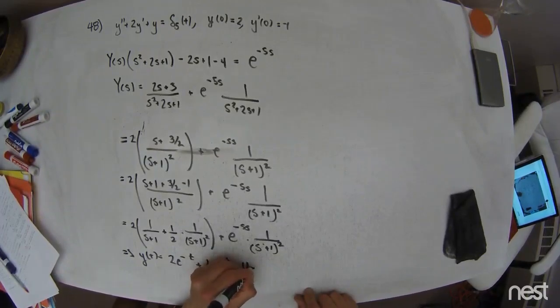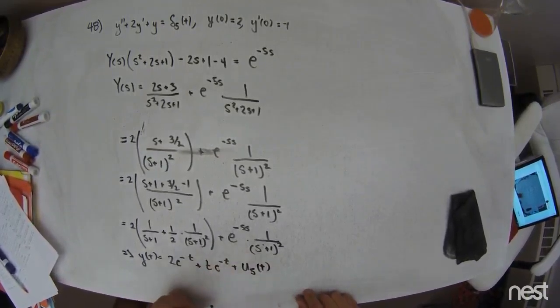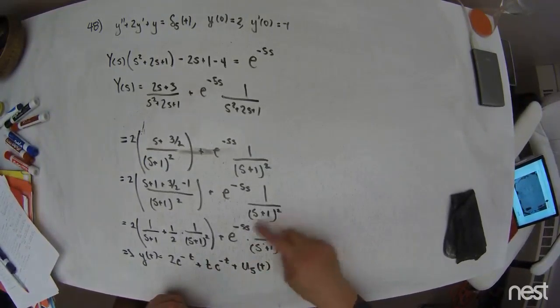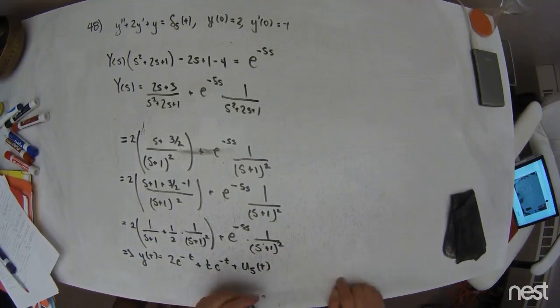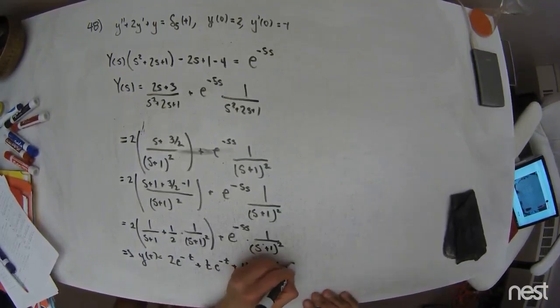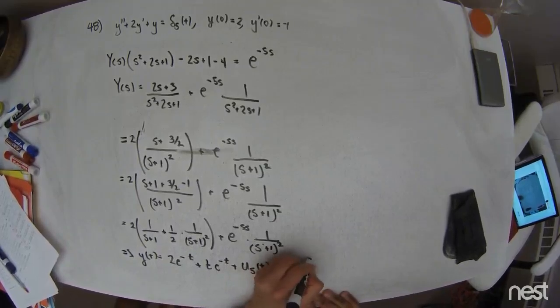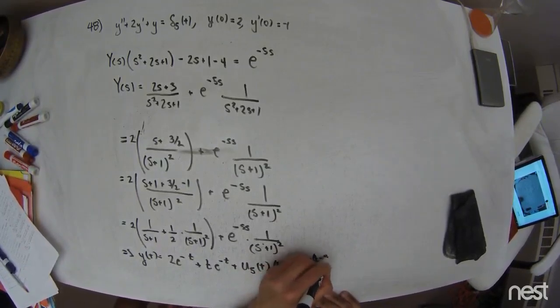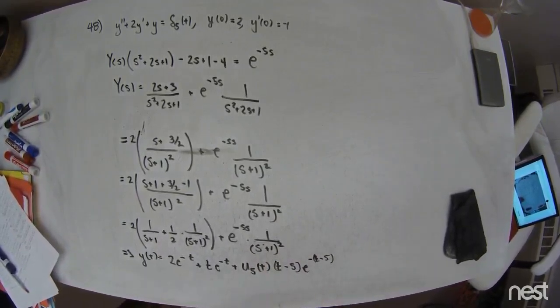And this becomes a U5T, the exponential speaking of a time delay. Looking at table entry number 5, I take the inverse transform of this. But I already know it. It's TE to the negative T. But I have to time delay everything in 5 seconds. So I get T minus 5, E to the negative T quantity minus 5. That's the solution.